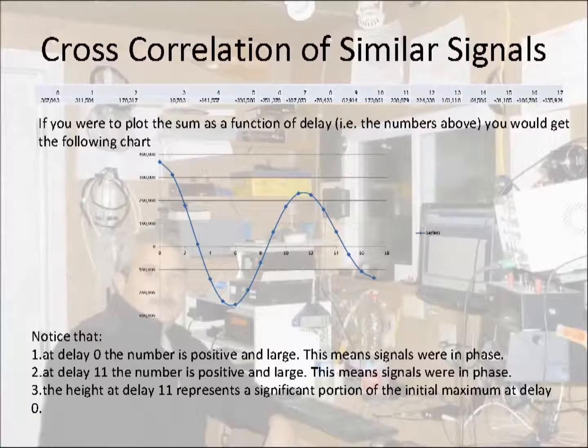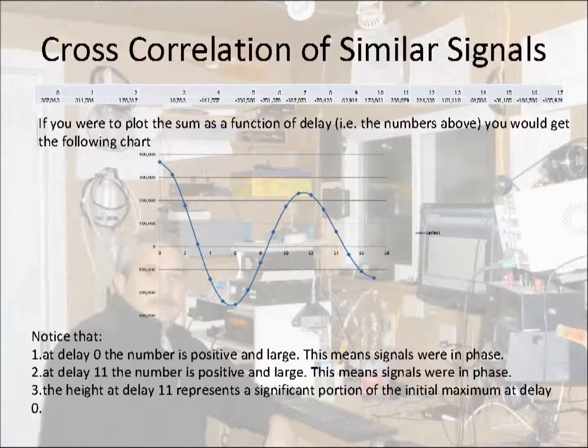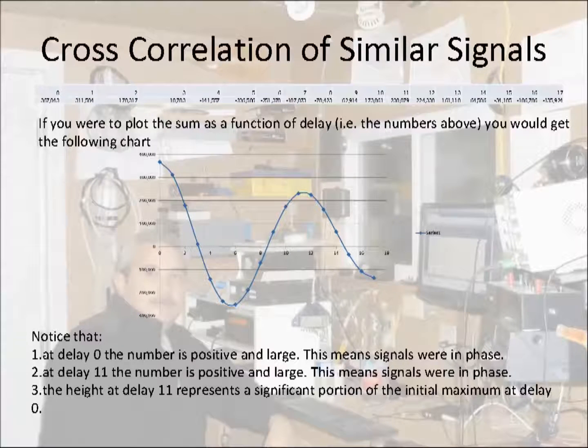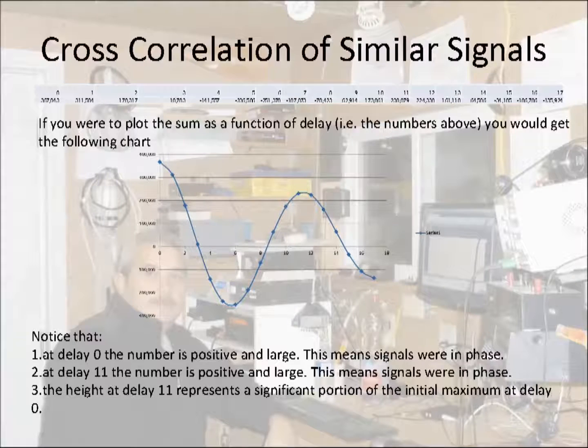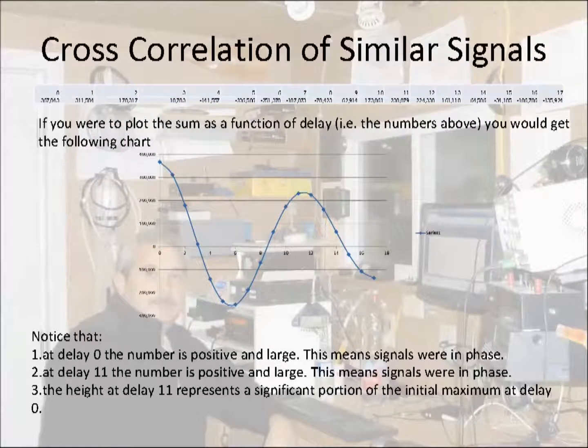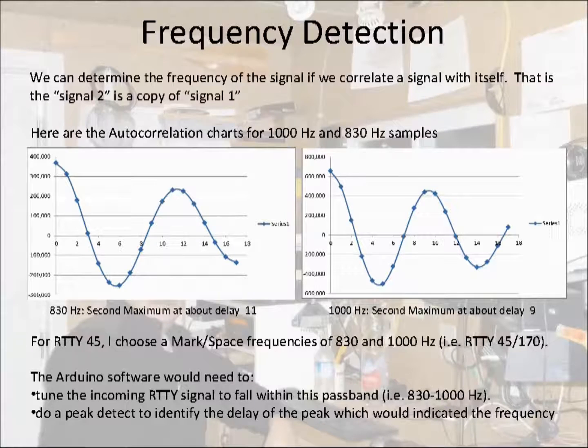So here's a plot of sum versus delay. You can see the first maximum at delay zero and a second maximum between delays 11 and 12. The other important observation is that the height of the second maximum relative to the first maximum, that height could be used as a threshold at which you could identify whether the signal is truly a periodic signal and it's within the passband.